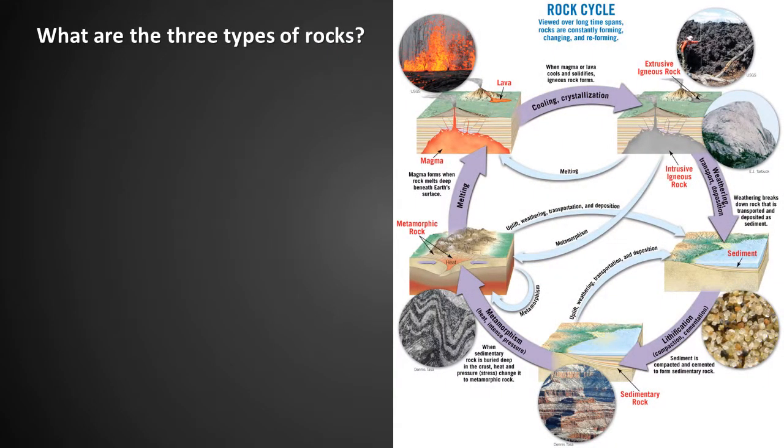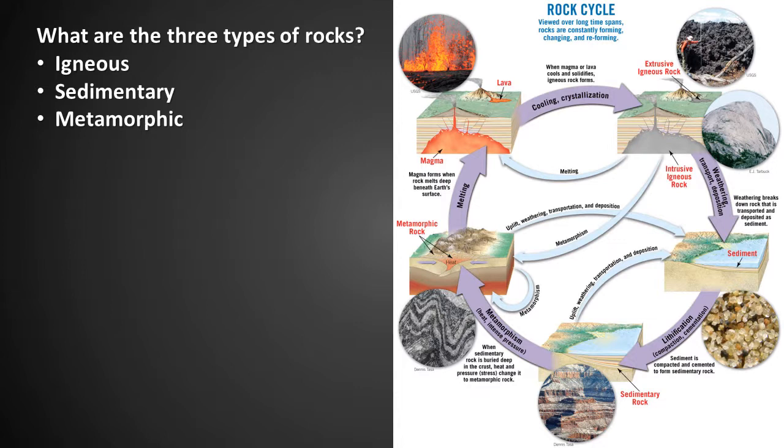Since we are talking about rocks, it is good to review the three main kinds of rocks. Do you know what they are? Yes — igneous, sedimentary, and metamorphic. We'll spend more time looking at these different kinds of rocks later. The figure shows the rock cycle and the different processes by which rocks can change from one type to another. You can find this figure in the textbook.